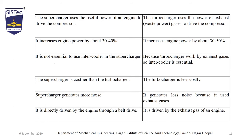The supercharger increases engine power by about 30 to 40 percent, whereas the turbocharger increases engine power by about 50 percent. In a supercharger, an intercooler is not essential because it is not directly taking heat from nearby high-temperature sources. But the turbocharger works using exhaust gas, so an intercooler is essential to maintain the density of the intake air. The cost of the supercharger is higher than the turbocharger. The supercharger generates more noise and the turbocharger produces less noise.